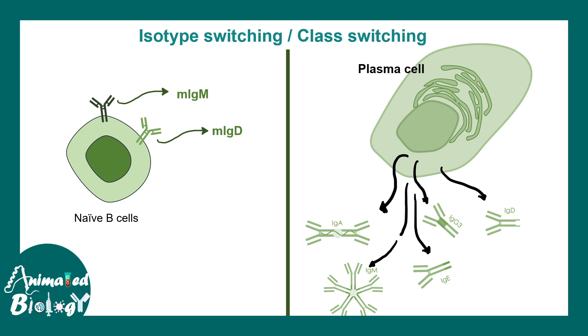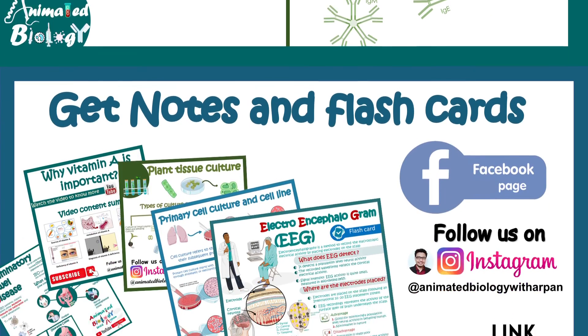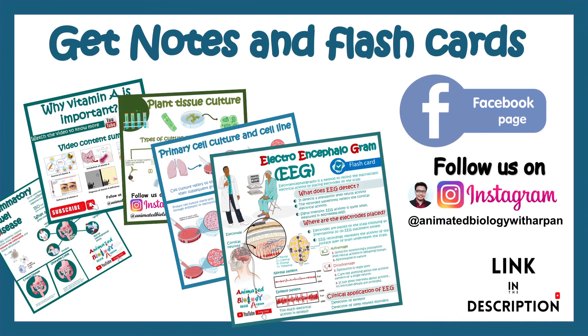This is done by a process known as isotype switching reaction or class switching recombination. If you want to learn more about that, there is a dedicated video on that topic.